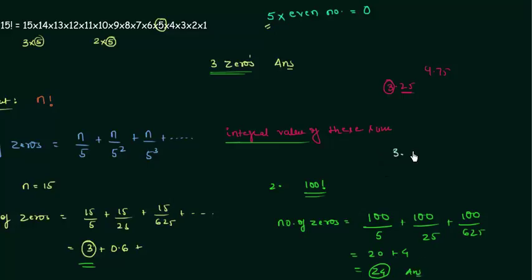So at the end of 100 factorial total number of zeros are 24 and this is our answer. Third problem is a homework problem. You have to find out total number of zeros at the end of 500 factorial. Use this shortcut and once you have your answer post it in comment section.